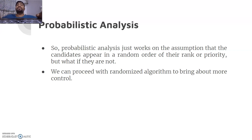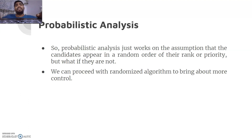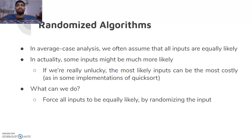Probabilistic analysis works on the assumption that candidates appear in random order of rank or priority - but what if they are not? The problem starts here: suppose the employment agency wants to make more money. Every person I hire pays something to the agency, so the agency is incentivized to send a better candidate each new day. We can't rely on these assumptions, so we take the help of randomized algorithms.